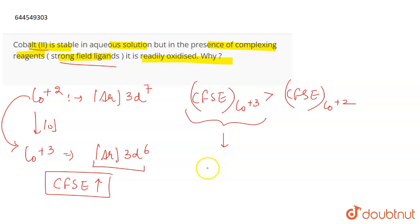So the major reason is the increase in CFSE. The CFSE value for Argon-3D-6 is going to be more as compared to the CFSE value for Co plus 2 in which the configuration is 3D-7.